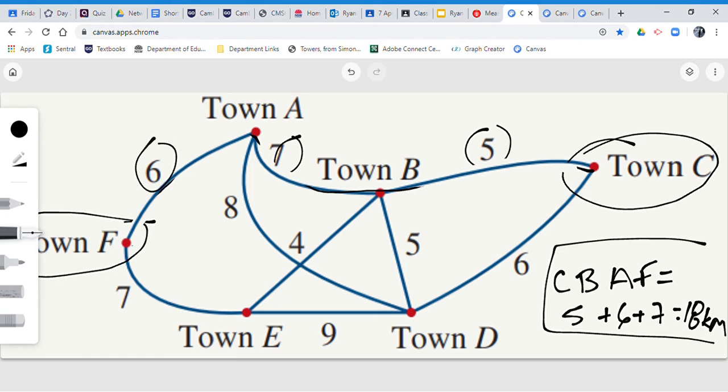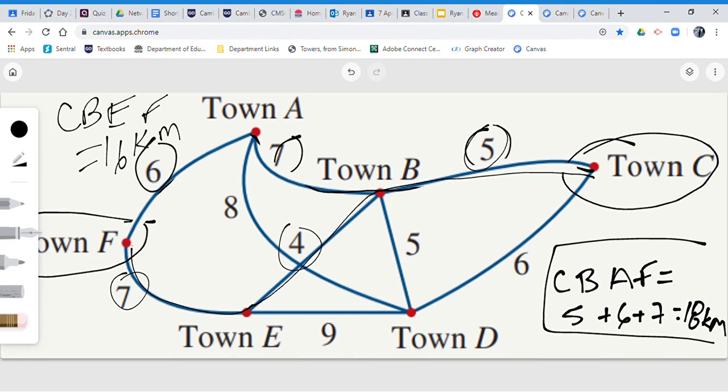So we'll look at another one. We could go C to B, and then after C to B, let's cut across to E and then over to F. So that is C to B to E to F. Now you add them all up, C to B to E to F. So that's 5 plus 4 plus 7, which I believe gets you 16 kilometers. Definitely a possibility.